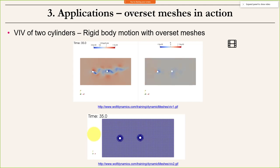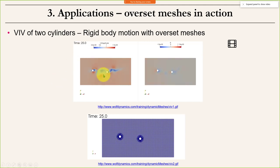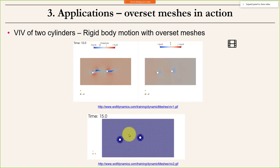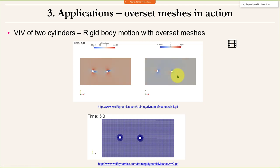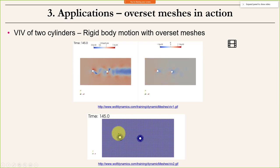Another very nice case is vortex-induced vibration of a cylinder. Here the motion is not prescribed — the bodies react to the flow forces. You can see the vortex shedding causing the cylinder to oscillate. You define the body properties and get the output. These are challenging problems where Laplacian smoothing would be quite tricky, but overset meshes handle them easily. One observation: the pressure field shows oscillations at the overset patches — it is better to place overset patches far from strong pressure gradients.